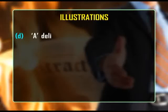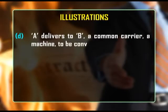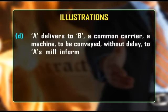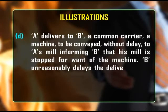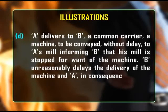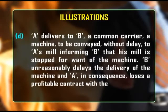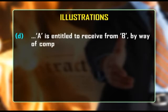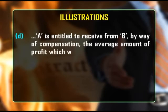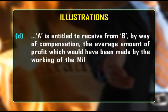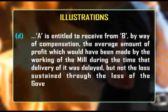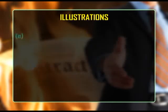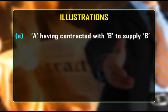Another illustration: A delivers to B, a common carrier, a machine to be conveyed without delay to A's mill, informing B that his mill is stopped for want of the machine. B unreasonably delays the delivery of the machine and A in consequence loses a profitable contract with the government. A is entitled to receive from B by way of compensation the average amount of profit which would have been made by the working of the mill during the time that delivery was delayed, but not the loss sustained through the loss of the government contract.